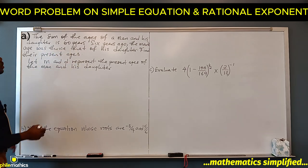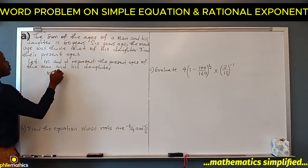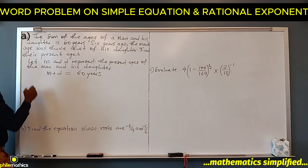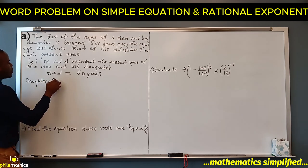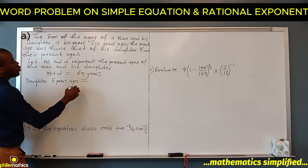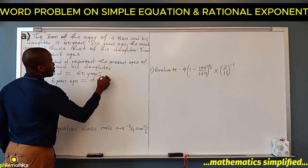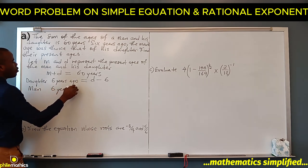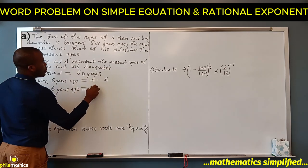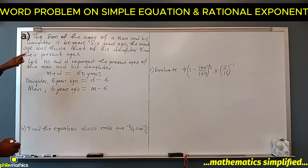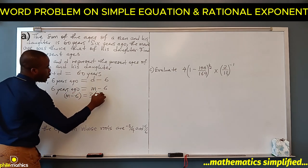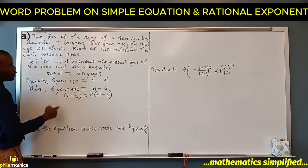Their sum is 60 years, so M plus D equals 60. Six years ago, the daughter's age was D minus 6, and the man's age was M minus 6. The man's age was thrice that of his daughter's age, so the man's age was three times the daughter's age. We are asked to find the present ages M and D.